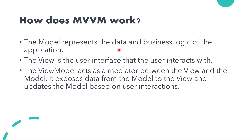The ViewModel acts as a mediator between the View and the Model. It exposes data from the Model to the View and updates the Model based on user interface interactions. The ViewModel is essentially a bridge between the View and the Model. It extracts data from the Model class and renders it to the View using data binding or the findViewById method in Android.